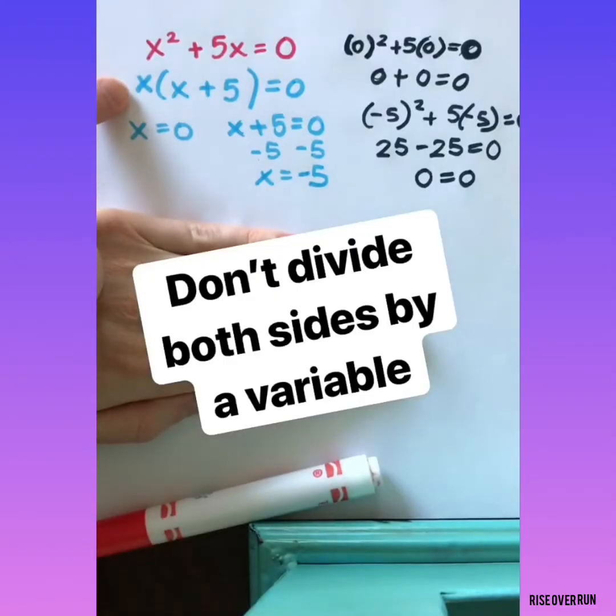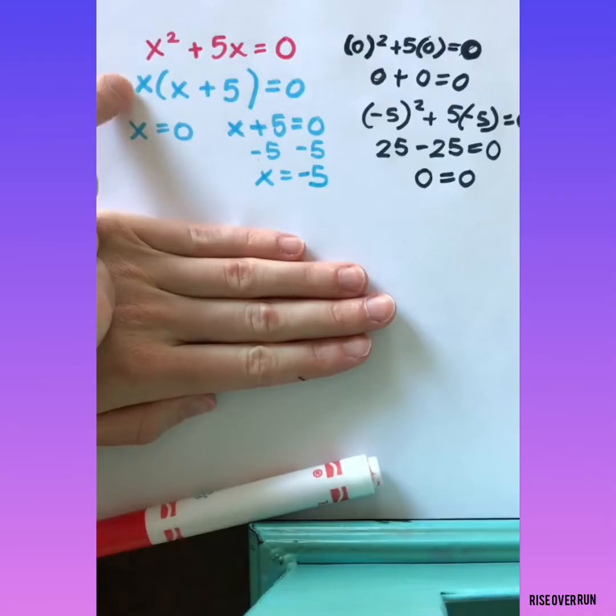Let's back up and look at one thing here. Some students, when they get to this step, want to divide both sides by x. Now technically, you're keeping the equation balanced, but when you divide by a variable to cancel it, you end up losing one of your solutions. So don't do that.